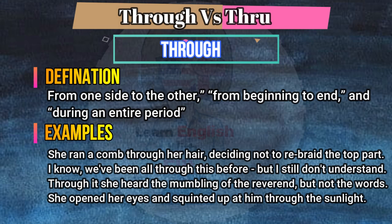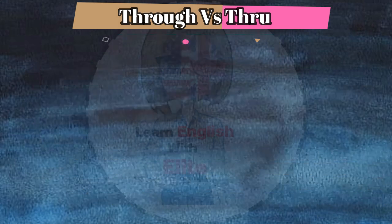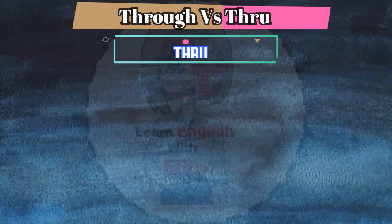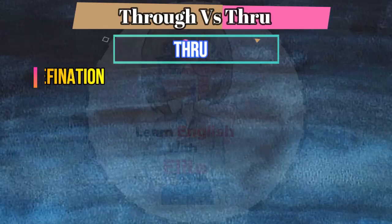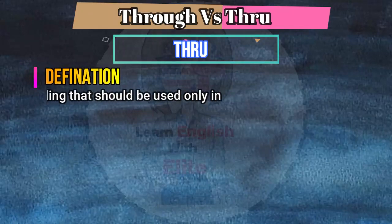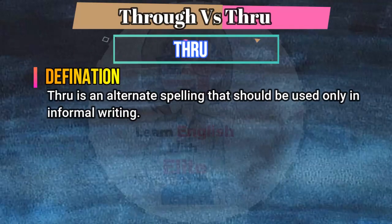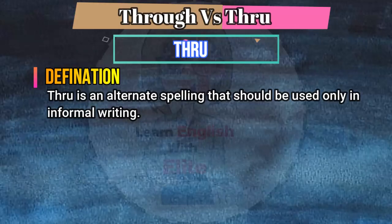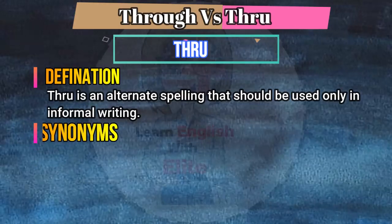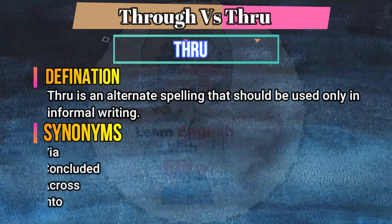Now let me define the second word: thru. The definition of thru is: thru is an alternate spelling that should be used only in informal writing.